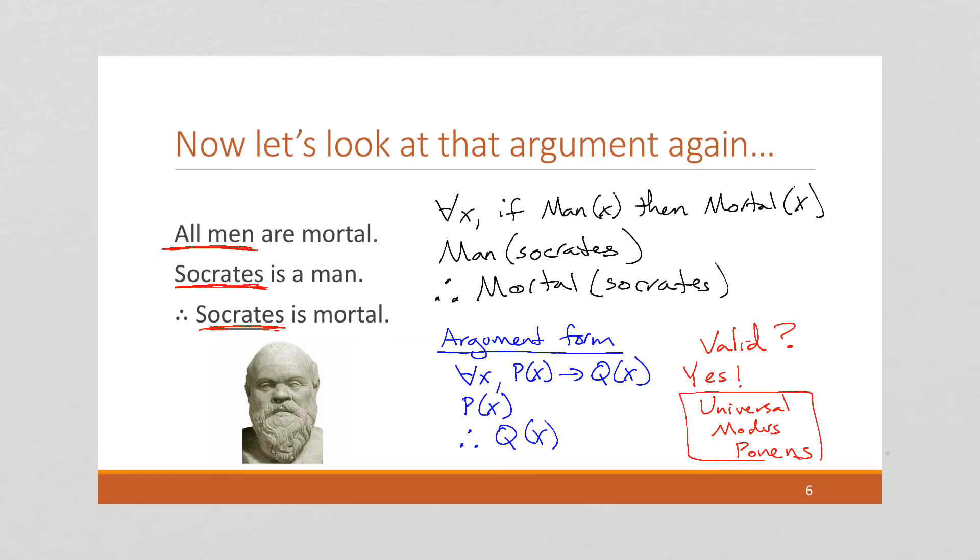So this uses that property of universal instantiation to allow us to expand our argument to use these quantifiers, such as all men. And we can parse this and say this is valid. This is a known form, universal modus ponens. Let's look at another.